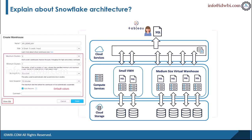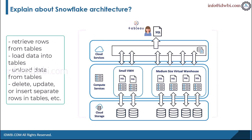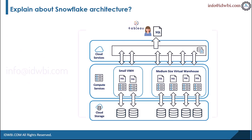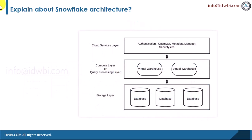Each virtual warehouse is packed with compute resources such as CPU, memory, and temporary storage required to perform SQL and data manipulation operations — retrieving rows, loading data, unloading data, and DML operations like delete, update or insert. Virtual warehouses come in multiple sizes, and each increase to the next larger size doubles the computing power. Since warehouses don't share computing resources with one another, there is no performance impact on other warehouses if one goes down.